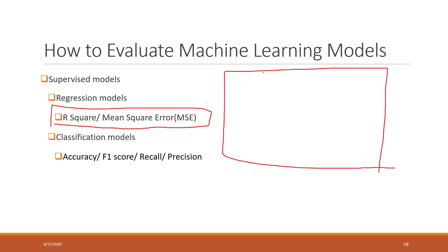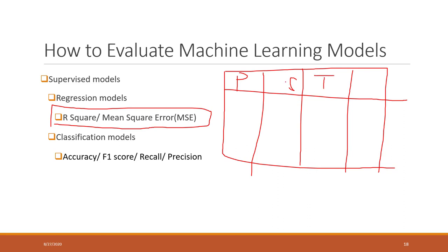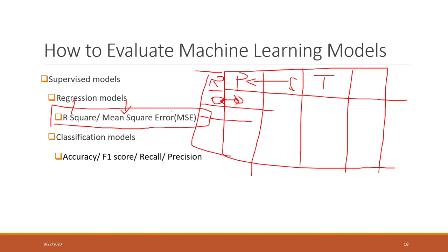For example, if we have house price data with the size of the house and the type of house, and we use size to predict price, we will have our predicted results. We compare those predicted values against the original true price values. We can compare the differences using R-squared and also mean square errors.